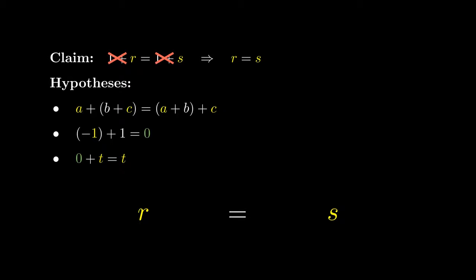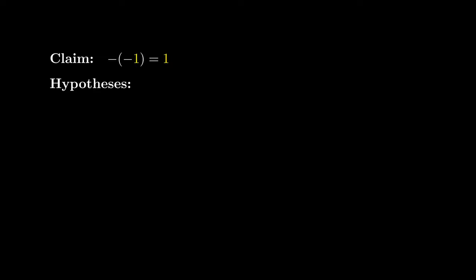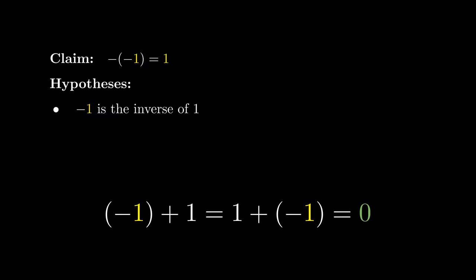The additive inverse idea helps us prove that the negative of the negative of 1 equals 1. By definition, the negative of 1 is the inverse of 1, meaning adding negative 1 to 1 on either side gives the additive identity 0. Shifting perspective: adding 1 to either side of negative 1 also gives 0, making 1 the inverse of negative 1. Therefore the negative, meaning the inverse, of negative 1 must equal 1.